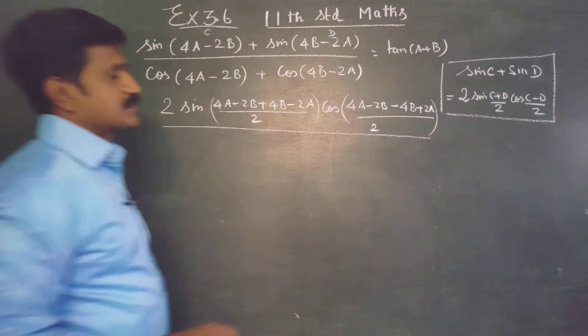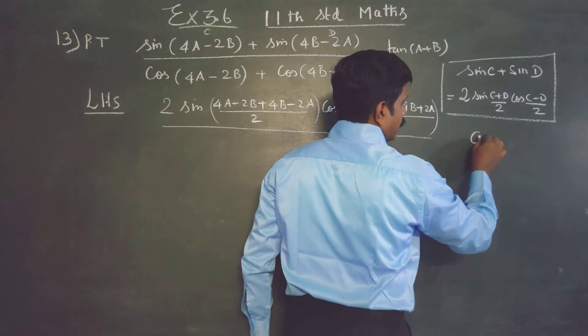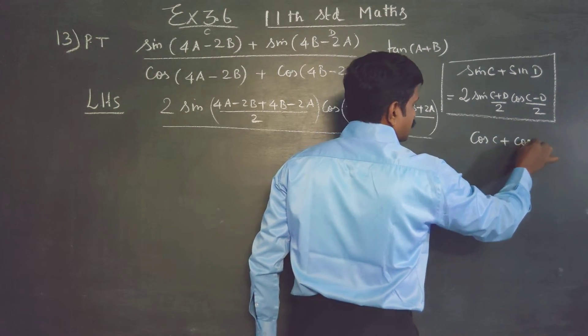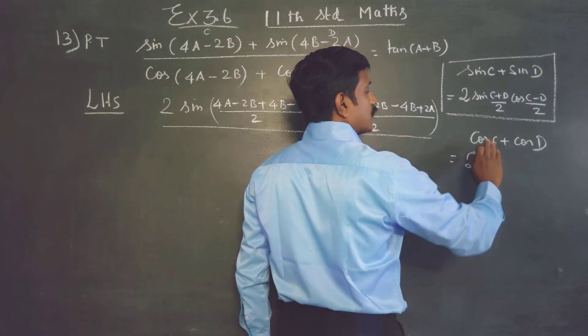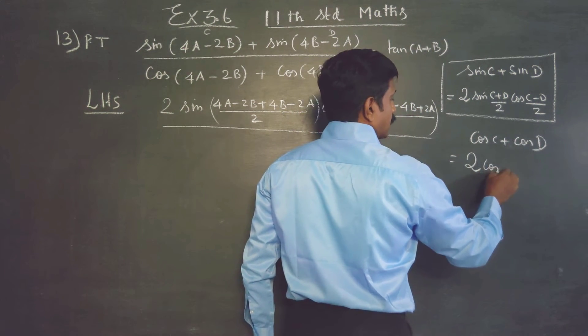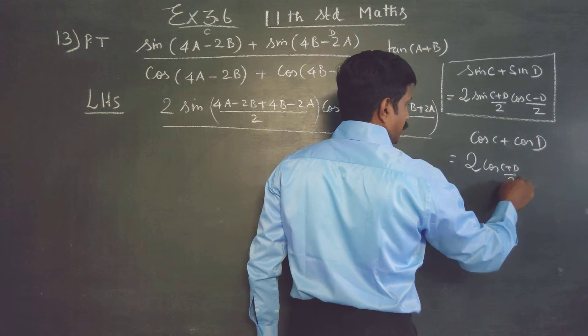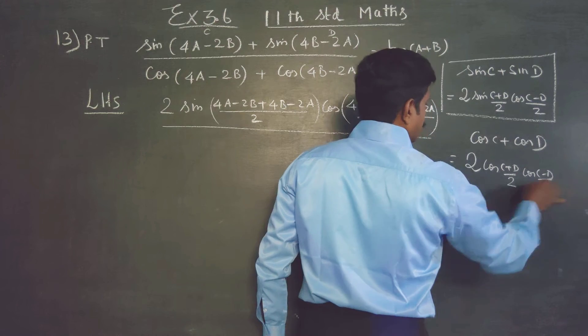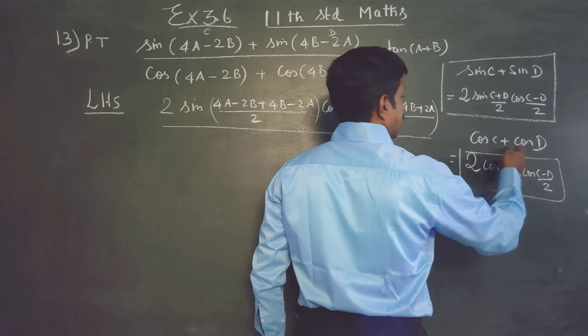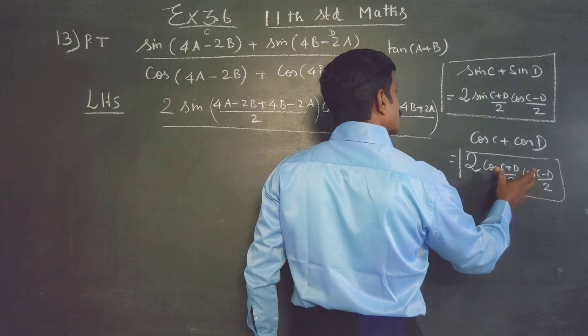Cosc plus cosd formula. Again, you have to recall another formula. Cosc plus cosd is 2 times cosc plus d by 2, cosc minus d by 2. This formula, cos add, same as this.